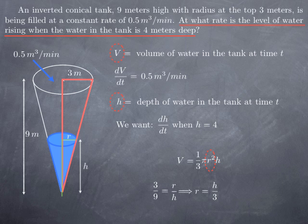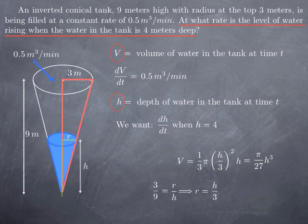We can substitute in the formula for V and replace r by h over 3 and we obtain one-third π multiplied by h over 3 squared multiplied by h. Since h over 3 squared is h squared over 9 we obtain π over 27 h cubed.